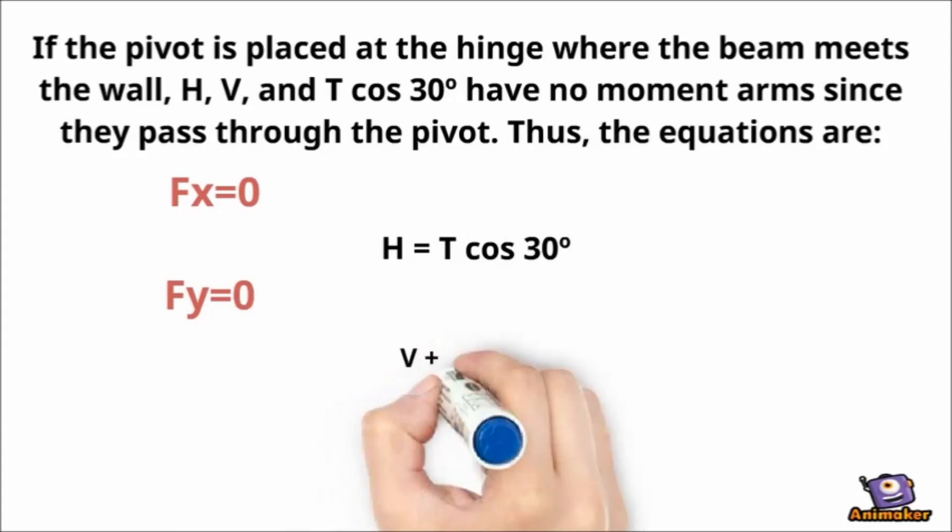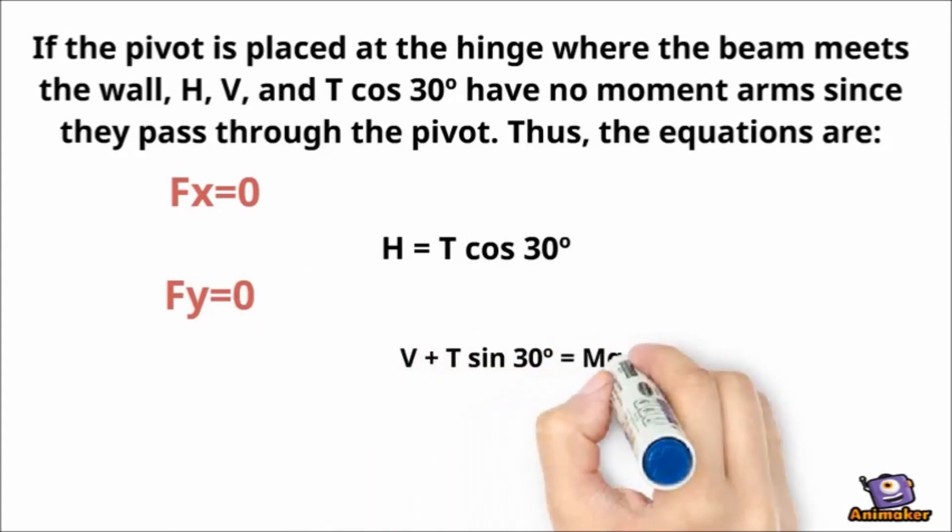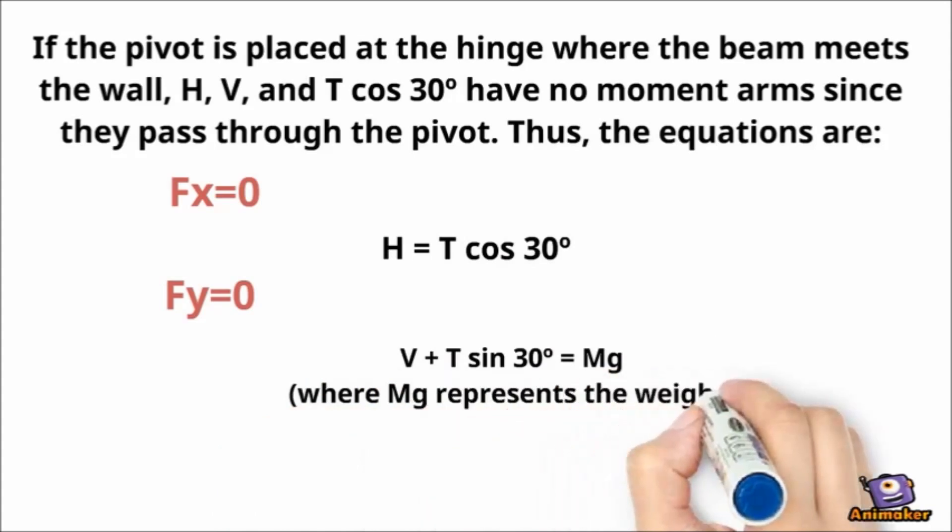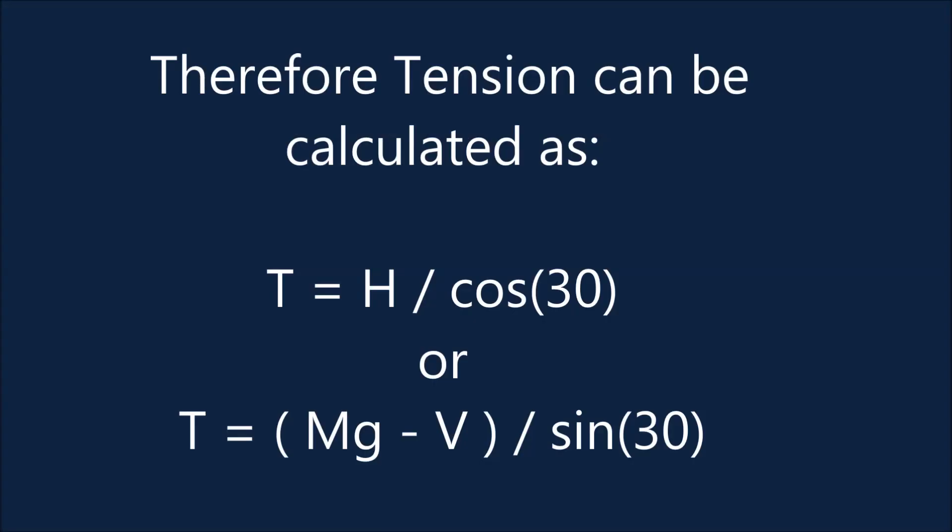Summation of Fy is equal zero. V plus T sine 30 is equals the mass multiplied by the gravity. Mg represents the weight of the beam. Therefore tension can be calculated as T is equals H over cosine 30. Or T is equals Mg minus V over sine 30. Thank you Ayesha.